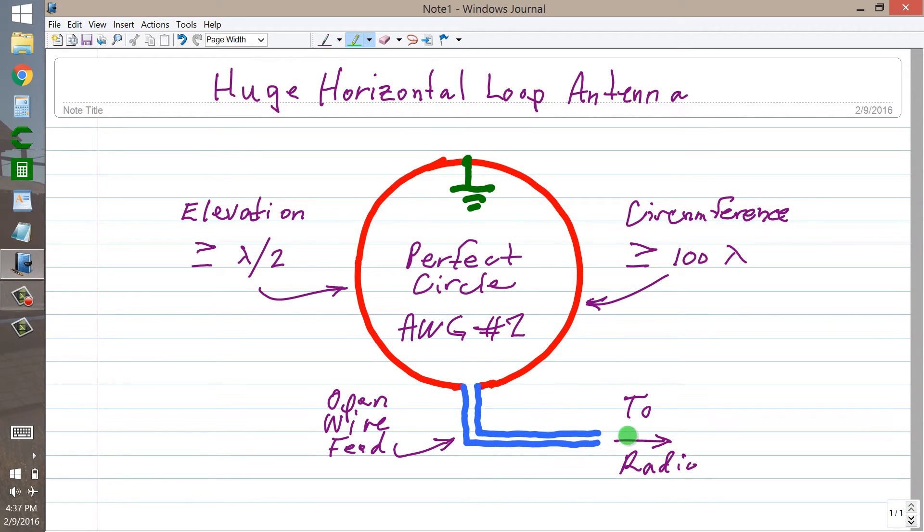Now, what are you going to get when you have an antenna like this? You're going to get an omnidirectional radiation pattern more or less in the horizontal plane. As for the vertical plane, I don't know exactly what the optimum elevation angle will be. I would imagine it would be quite low.